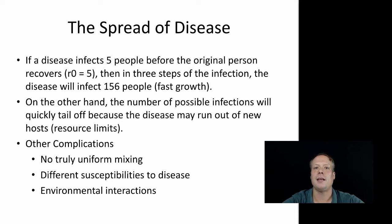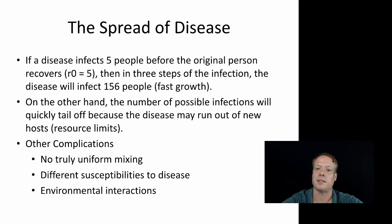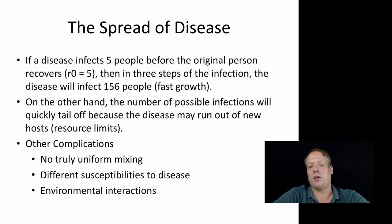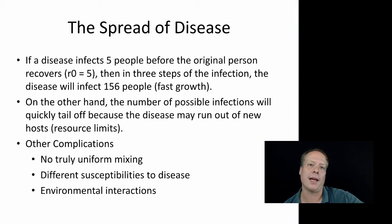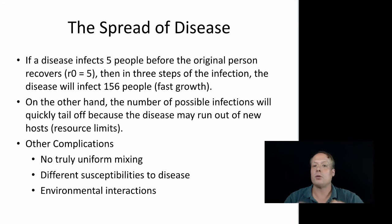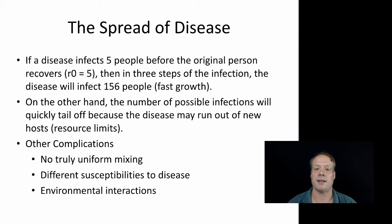On the other hand, in a lot of cases, diseases are spreading within a contained community. Thus, the number of possible infections is going to quickly tail off because the disease may run out of new hosts. So we want to investigate the relationship between this fast exponential growth and the resource limits that might happen. Those two notions occur in a lot of complex systems that are interesting to look at outside of disease spread, which is why we're talking about it.